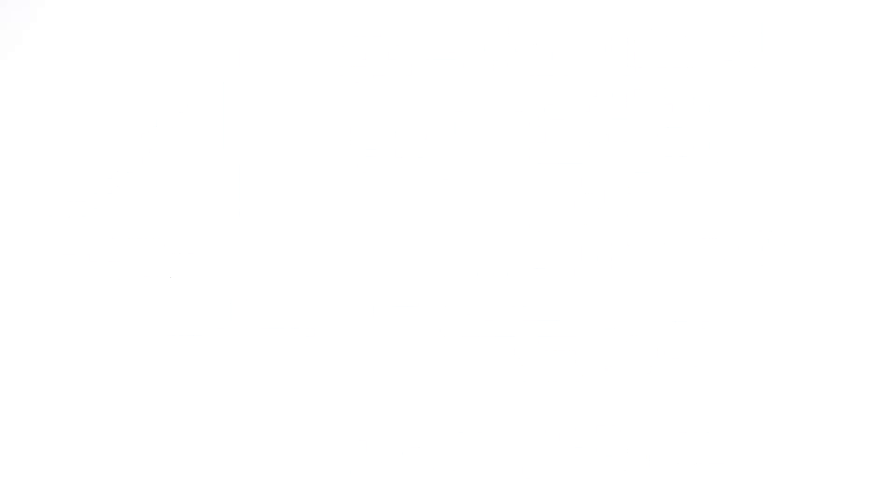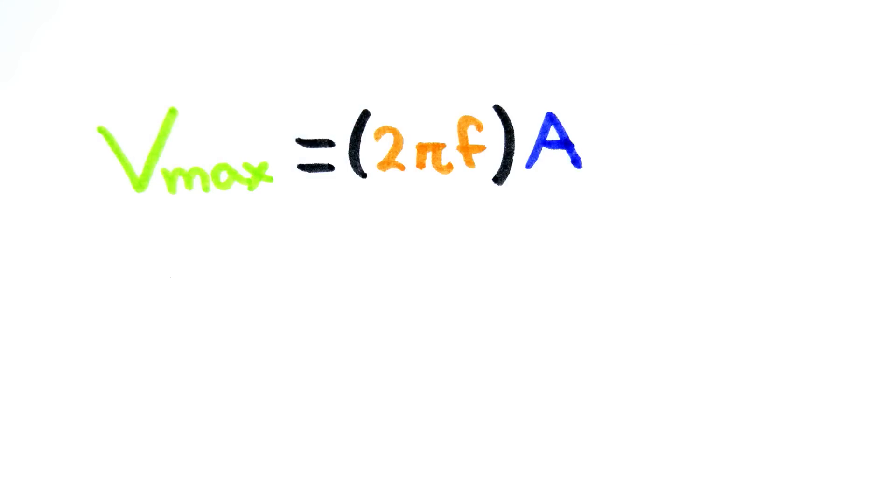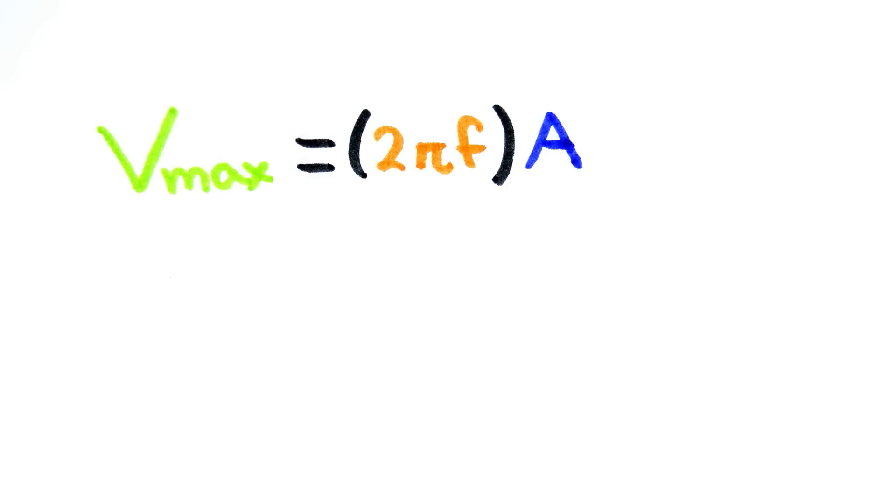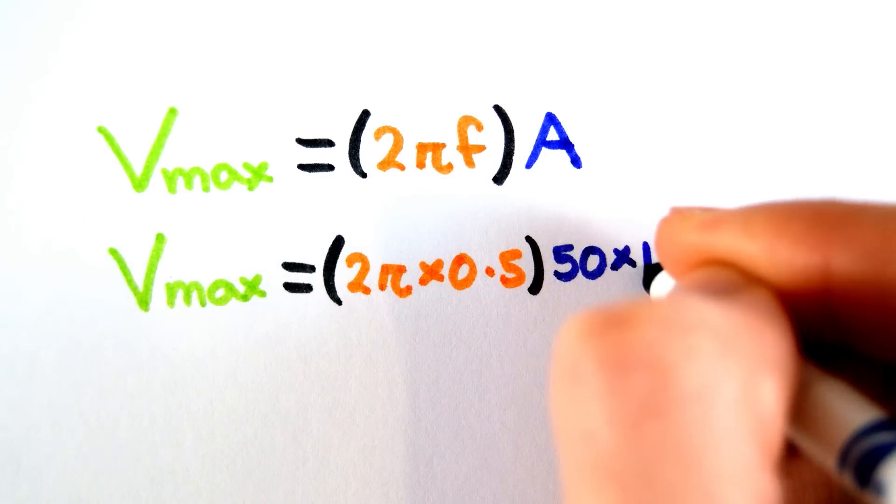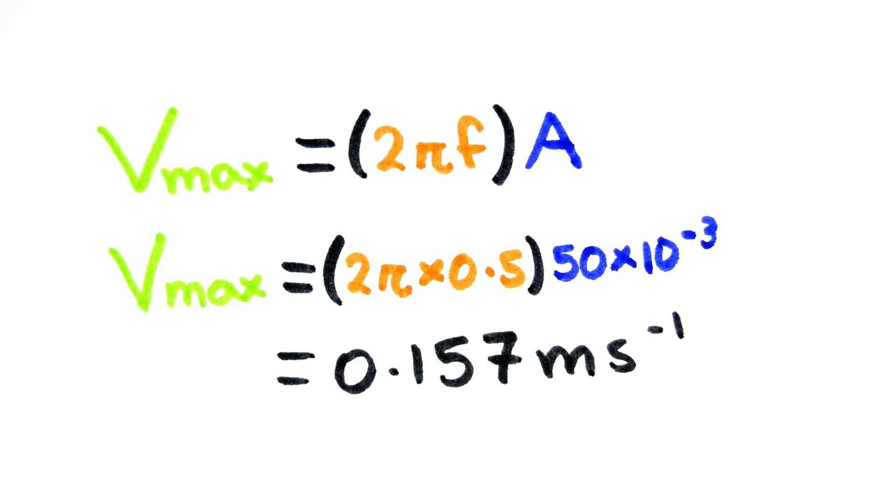The formula for the maximum speed of a body undergoing simple harmonic motion is v max equals 2πfa. Therefore, the maximum speed of the pendulum would be 0.157 meters per second.